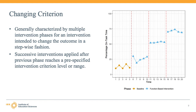As with the treatment reversal design, there are three opportunities to demonstrate an intervention effect in the example changing criterion design. Once between the initial baseline and the first intervention phase, next between the first intervention phase and the second intervention phase, and then finally between the second and third intervention phase.